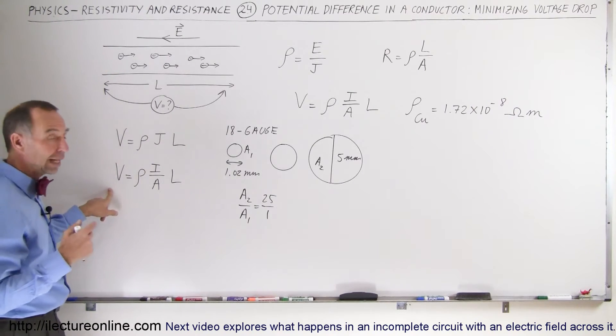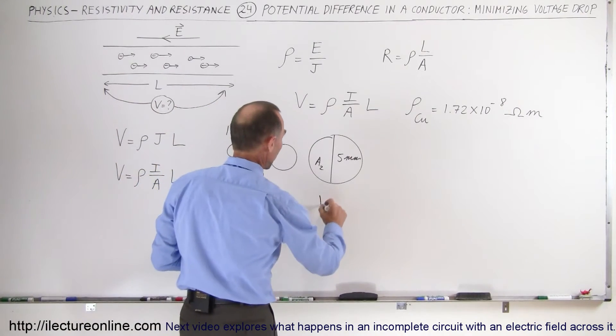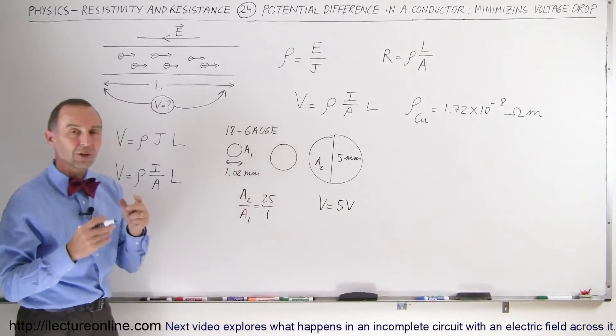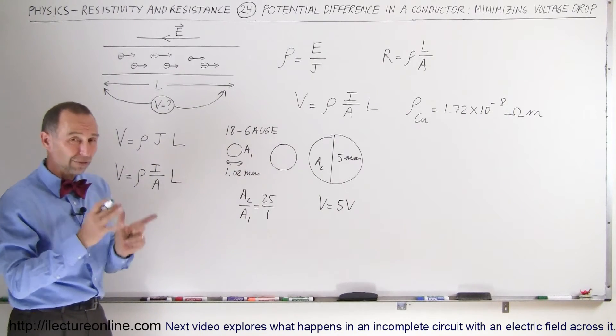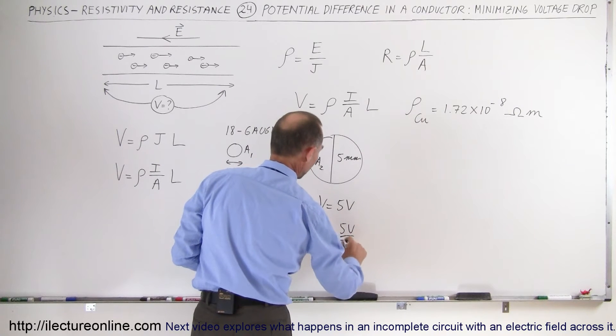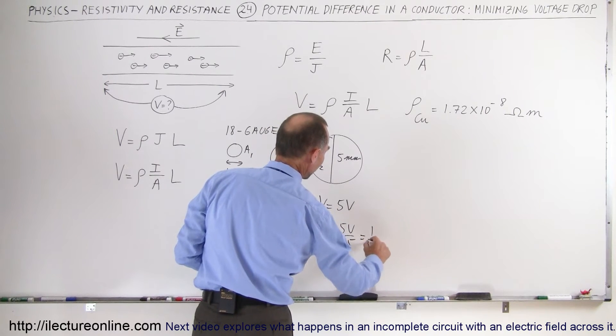In the previous example, we had a case where the voltage drop was equal to 5 volts. If we have a wire that is 5 times as large in diameter, therefore 25 times as large in cross-sectional area, the voltage drop will be 5 volts divided by 25, which is only 1/5th of a volt.